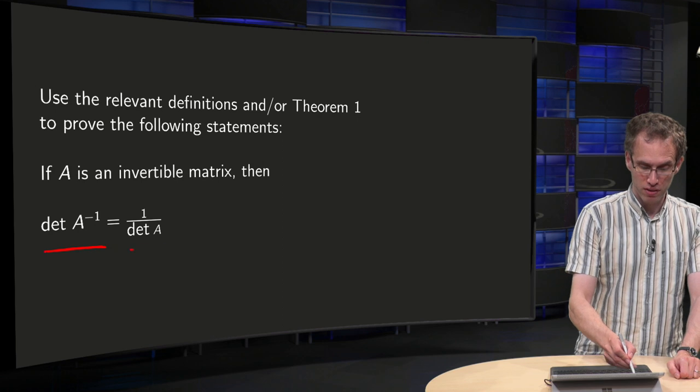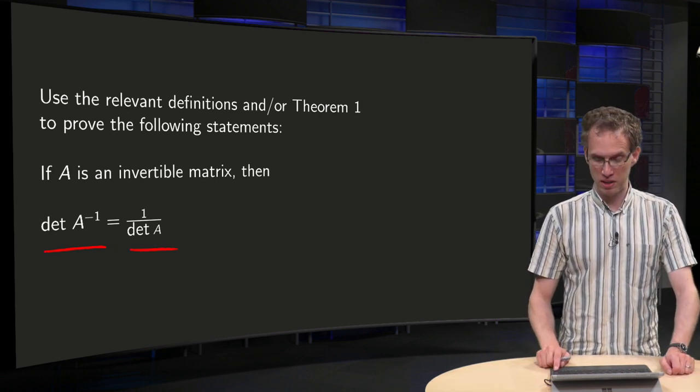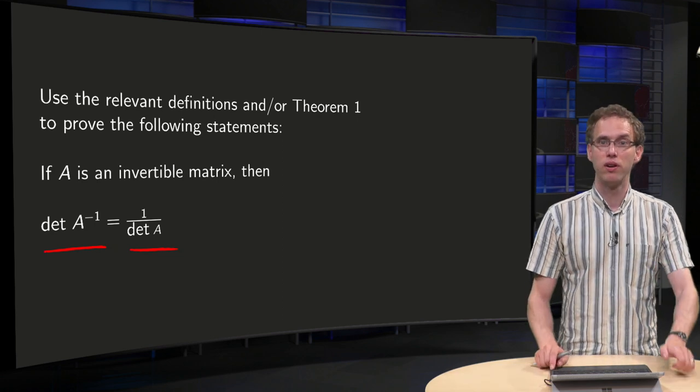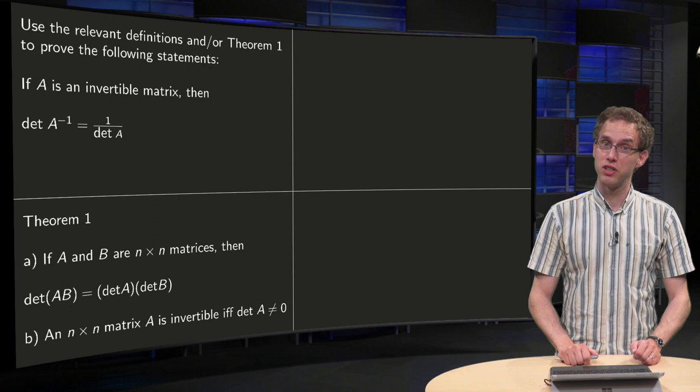So we are going to prove in this video the following statement: determinant of A inverse equals 1 over the determinant of A if A is an invertible matrix. And we can use the relevant definitions or Theorem 1, and what is Theorem 1?